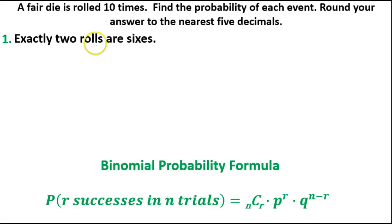N obviously is the total number that we have. In this case, it's going to be ten. R is the successes that we have, how many times we're going to choose it, which in this case will be two. We're going to have two rolls that are sixes.